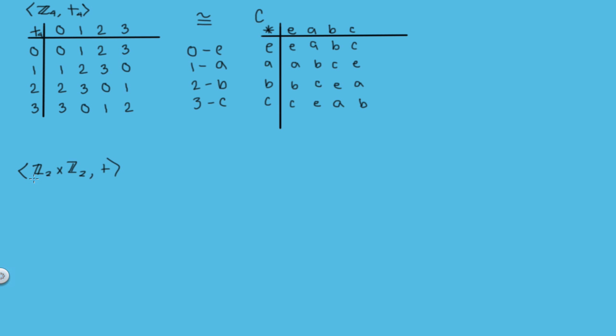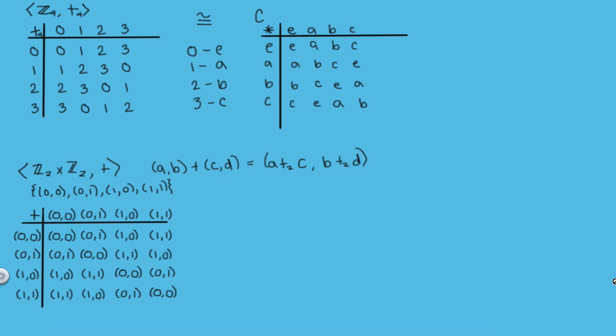Now let's look at the group containing the set of integers modulo 2 crossed with itself, and this set is just the set containing these four elements, and then we'll say this addition operation here is given by the element AB plus the element CD would equal A plus C, where this addition is modulo 2, and B plus D, where this addition is modulo 2. So this is not the regular addition operation, it's the addition operation given by this relation.